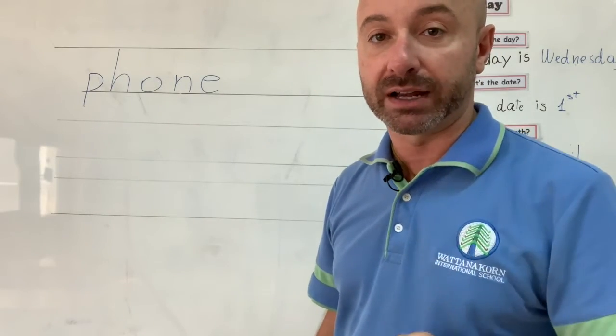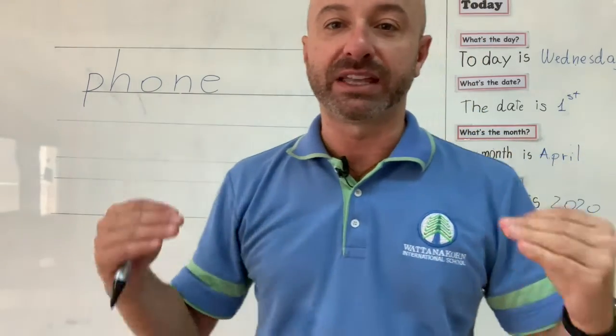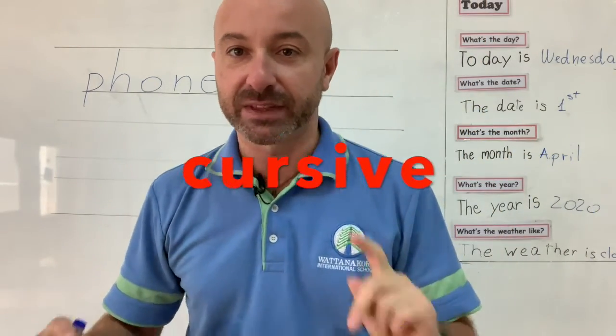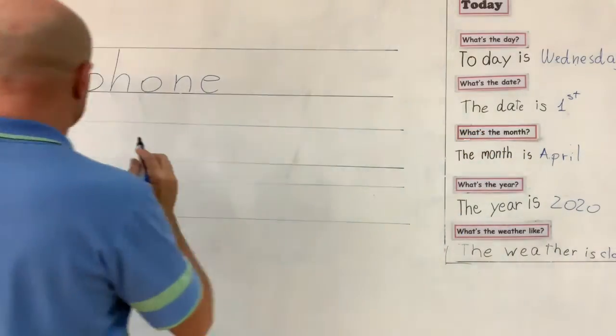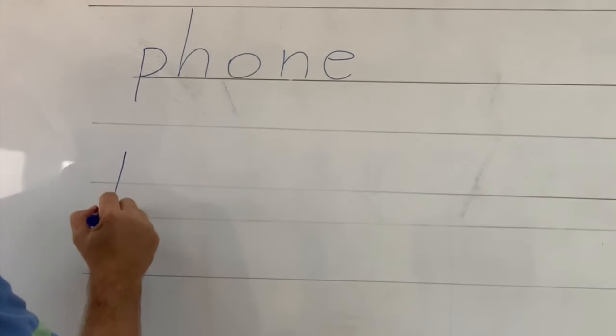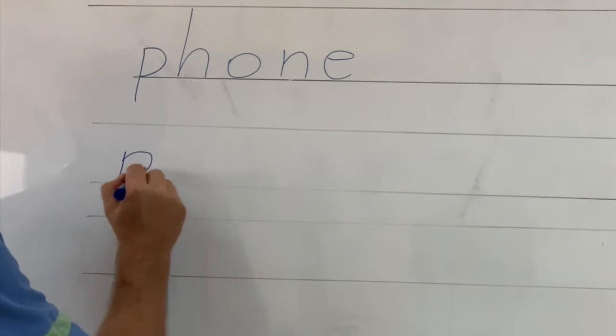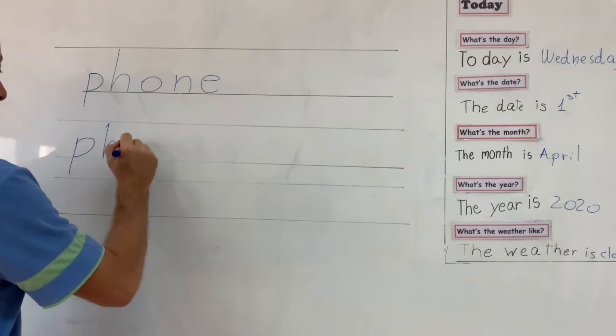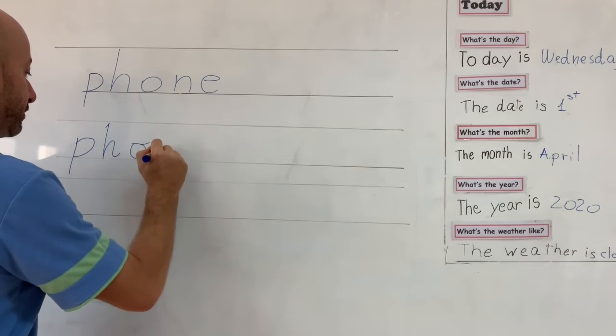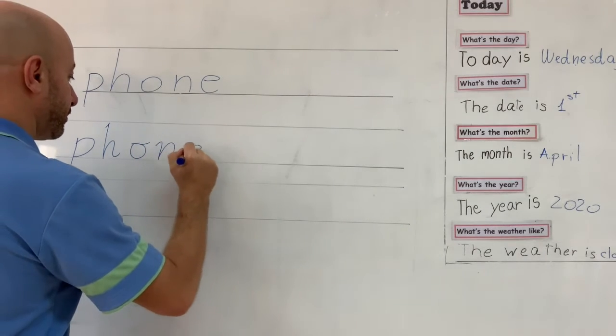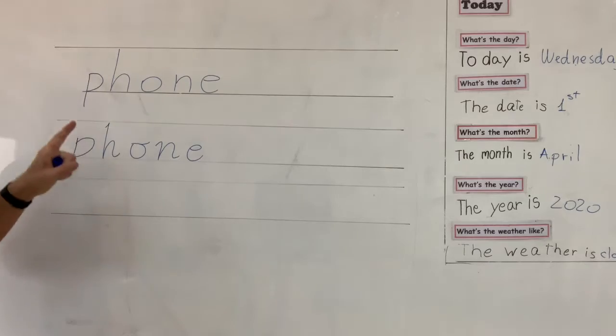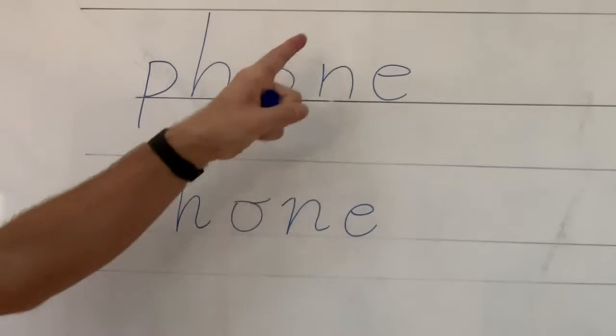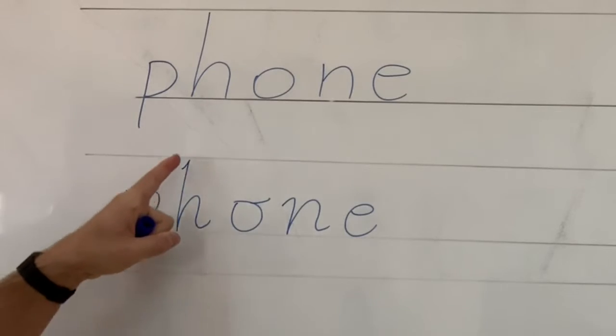The first one is cursive. Repeat, cursive. Look, I'm writing the same word in cursive. This is the second style, cursive.